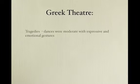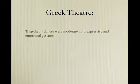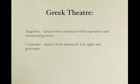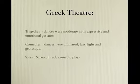Greek theater was a very important part of both the educational and artistic system in Greece. It had different modes: tragedies featured dancing that was moderate in tempo, expressive, and emotional; comedies were animated, fast, light, and grotesque — 'grotesque' meaning playful and humorous rather than horrific; and satyrs were satirical, rude comedic plays. All of these involved dance, and dance ensembles consisted of both speaking and dancing roles.